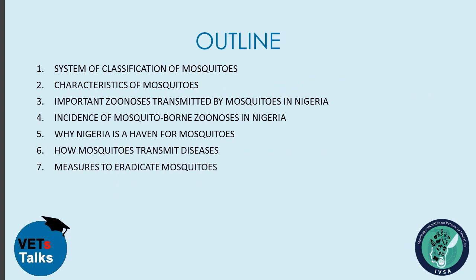The outline of this discussion is as follows. Number 1, system of classification of mosquitoes. Number 2, characteristics of mosquitoes. Number 3, important zoonoses transmitted by mosquitoes in Nigeria. Number 4, incidence of mosquito-borne zoonosis in Nigeria. Number 5, why Nigeria is a haven for mosquitoes. Number 6, how mosquitoes transmit diseases. And number 7, measures that could be taken to eradicate mosquitoes in the country.